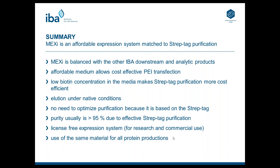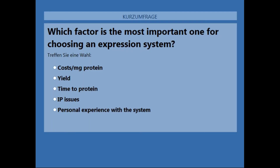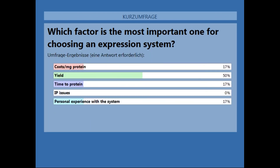With this, I come to the end of this webinar presentation. If you need further information, you can contact our technical support. I have a final poll: which factor is most important for choosing an expression system in your lab? Cost per milligram protein, yield, time to protein, IP issues such as license fees, or personal experience with the system? The results show that cost per milligram protein is a minor issue. Most important are yields, followed by time to protein. IP issues are not a problem for the audience, and personal experience is as important as the other factors. Thank you very much.